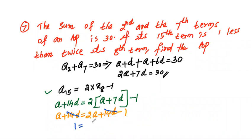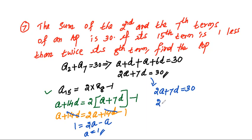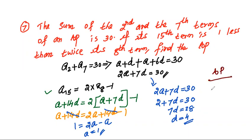The 14D terms cancel, leaving A equals 1. Substituting A equals 1 into 2A plus 7D equals 30: 2 plus 7D equals 30, so 7D equals 28, giving D equals 4. The required AP is 1, 5, 9, and so on. This question is also important from an exam point of view, so try to learn it properly.